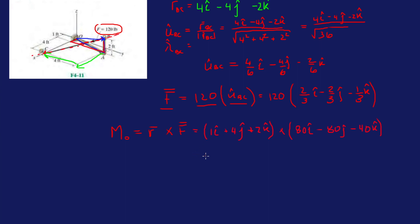So like I explained in the previous problem, we can do the cross product in one line or set up the determinant. Let's set up the determinant for this one since it has all three components. So we have i, j, k in the first row; then 1, 4, 2 for the components of our distance vector; and then 80, minus 80, minus 40 for the force components.